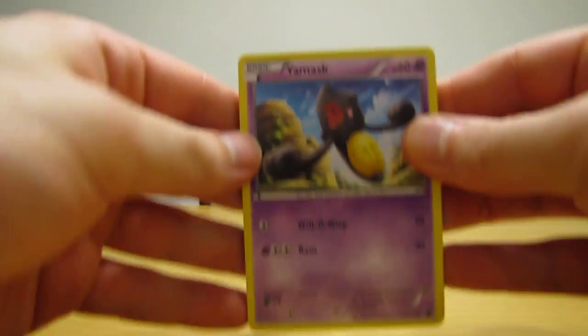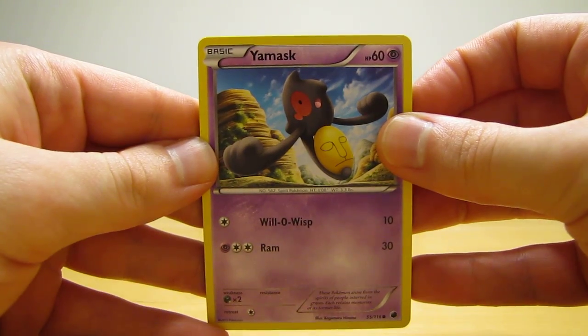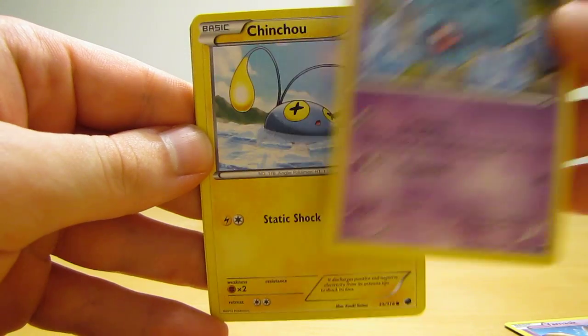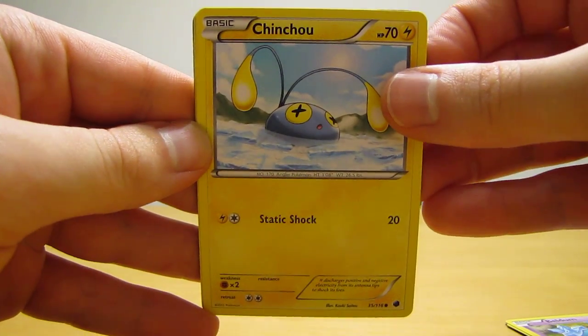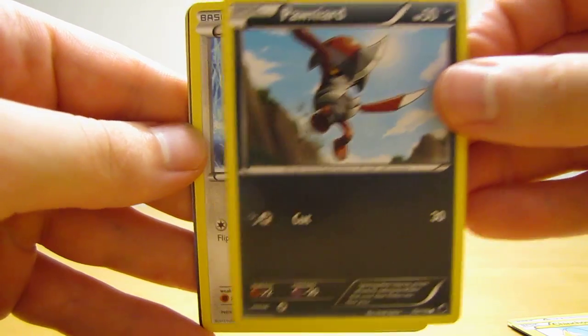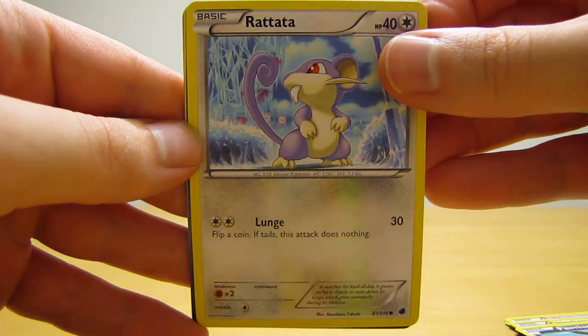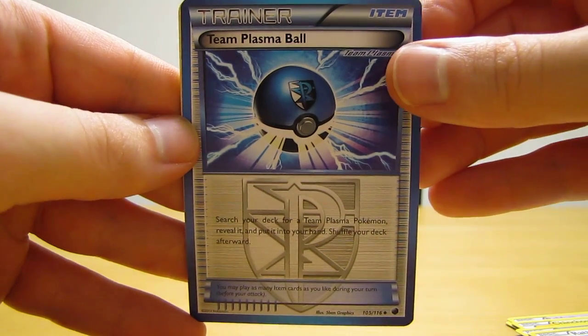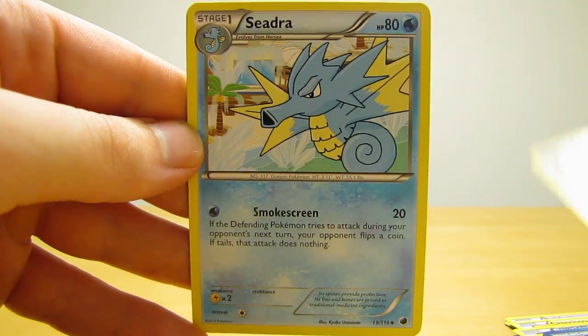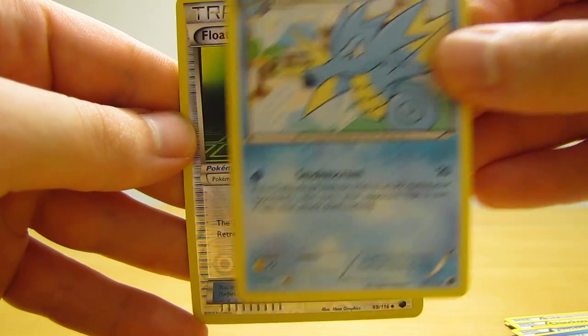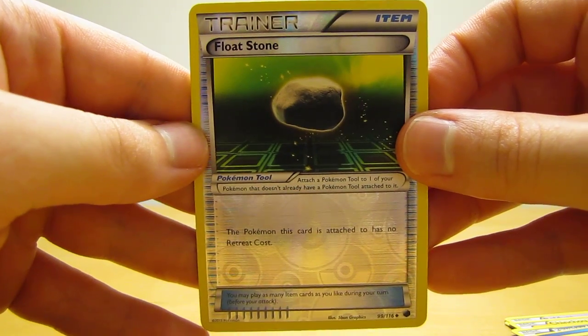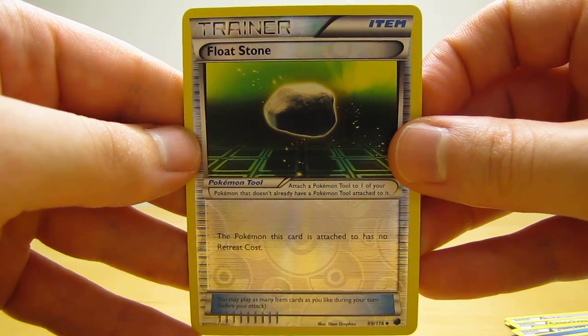Okay, so this pack starts off with Yamask, Beldum, Chinchou, Pawniard, Rattata, Team Plasma Ball, Onyx, Seadra, Floatstone, which is a reverse hollow trainer. It's an uncommon card.